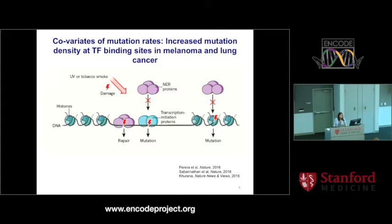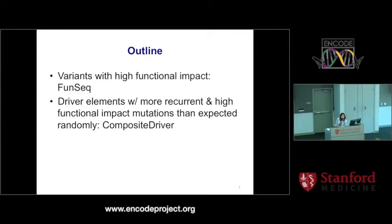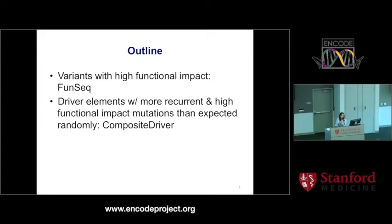The basic idea of how we look for drivers is by looking for positive selection, which is recurrence across multiple genomes. If this recurrence happens because of these background mechanisms and not because of positive selection, we'll reach the erroneous result that there are many drivers. I'm going to discuss two major methods. The first is something I developed as a postdoc in Mark Gerstein's lab at Yale, which we call FunSeq — for functional-based prioritization of sequence variants. The second method, which we are developing in my lab, converges signals of functional importance and recurrence while accounting for covariates to identify driver elements and give a p-value for the likelihood a region is a driver — we call this Composite Driver.